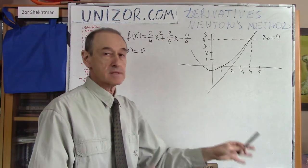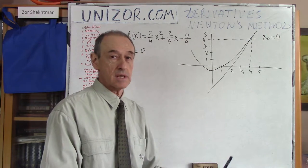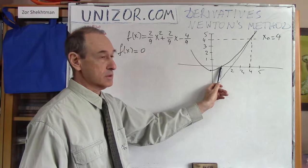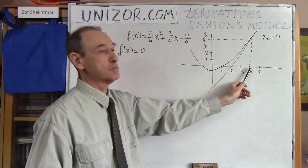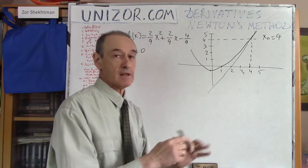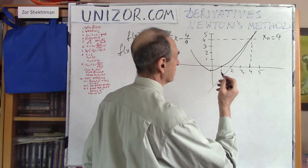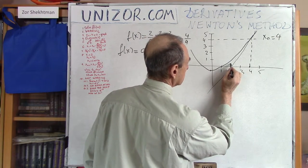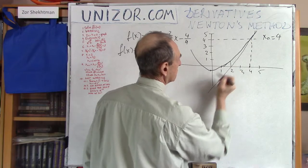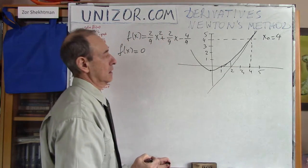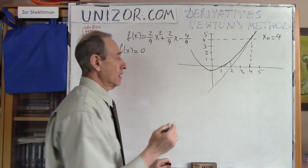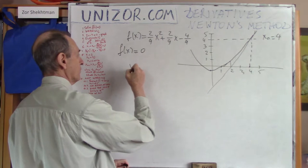Newton's idea is that this particular point from the tangential line is closer to the solution than the original starting point, and in many cases that is actually true. If we assume this is a true statement, we have come closer to the real solution. Which means we can repeat the same action — find the perpendicular, draw the tangential line again, and again get closer to the solution. That was his original idea, so let's try to calculate.